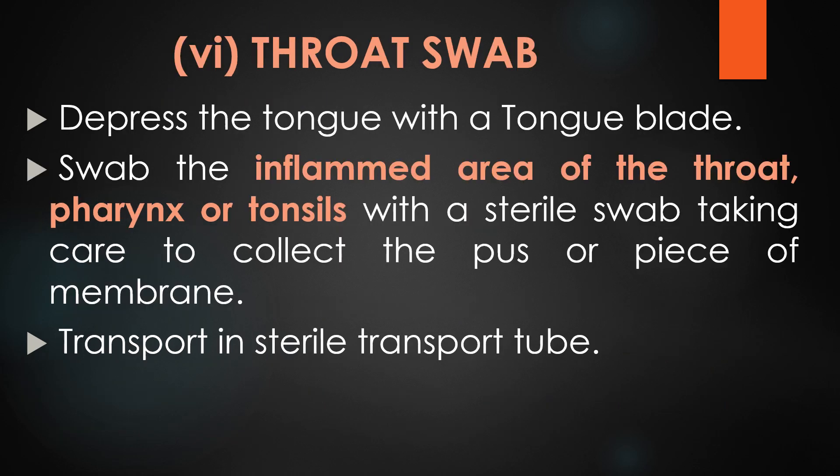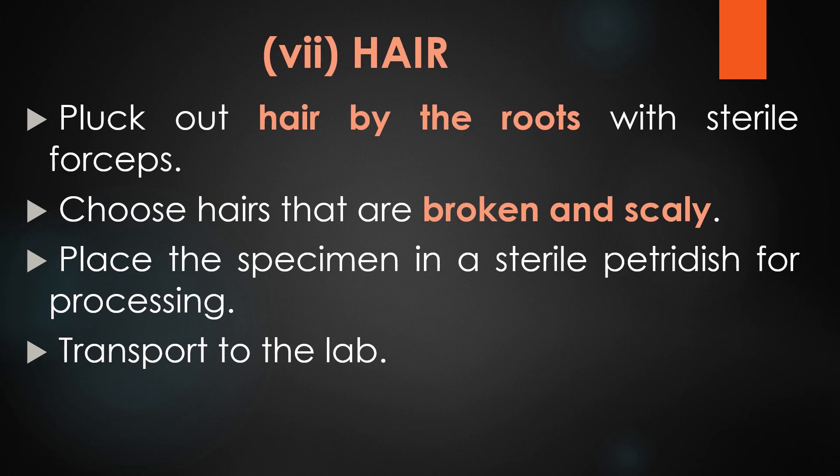Next is collection of throat swab samples. While collecting the throat swab, depress the tongue with a tongue blade, swab the inflammatory area of the throat, pharynx or tonsils with a sterile swab, taking care to collect any pus or piece of membrane. Transport the collected sample in a sterile transport tube. For collection of hair samples, pluck out hair by the root with sterile forceps, choosing hairs that are broken and scaly. Place the specimen in a sterile petri dish for processing and transport to the lab for further microbiological analysis.